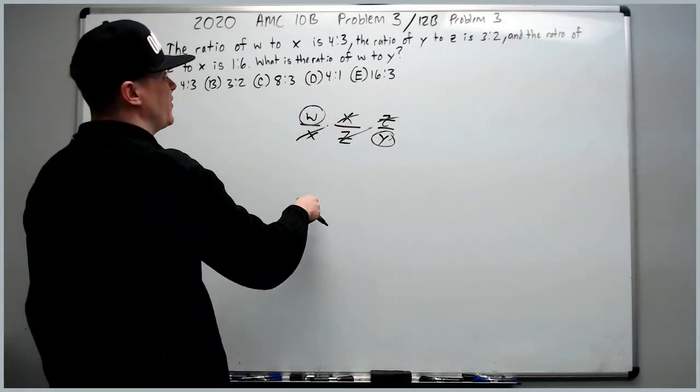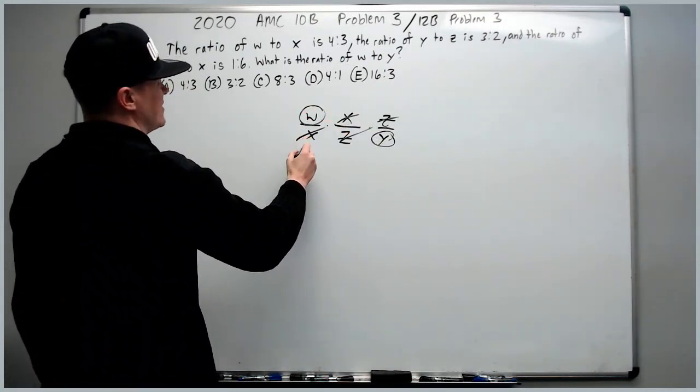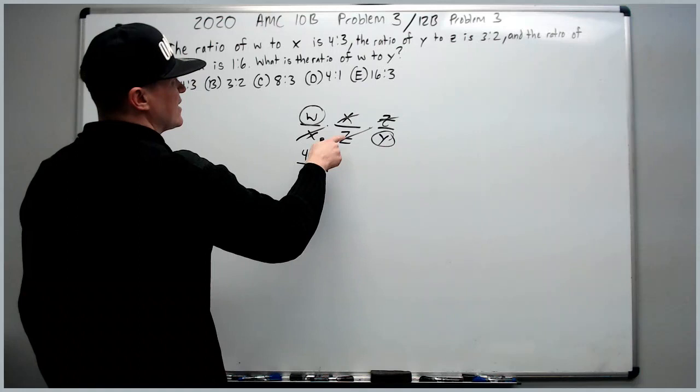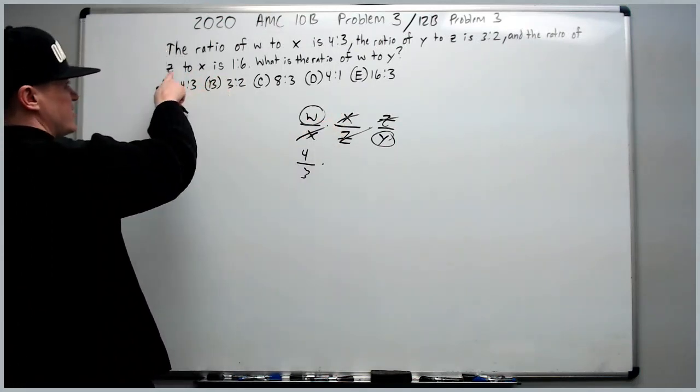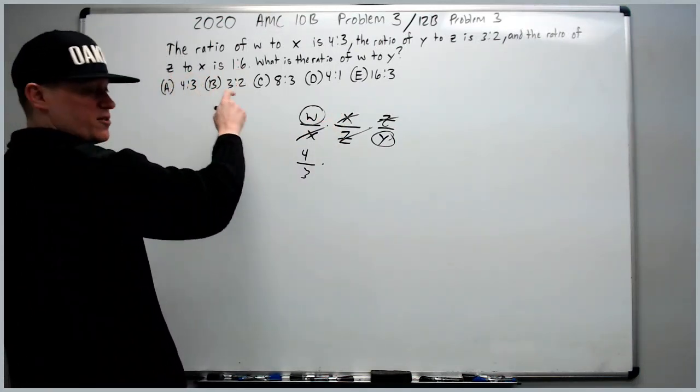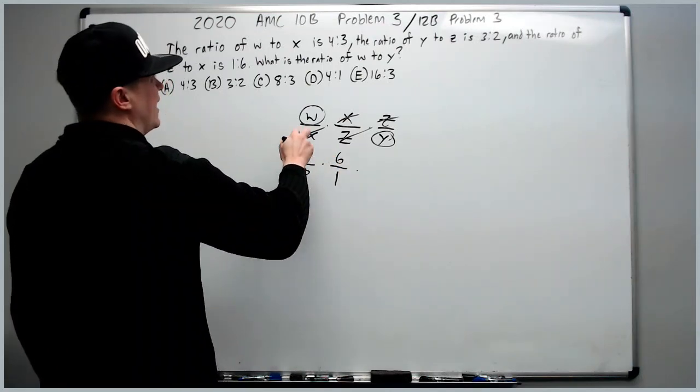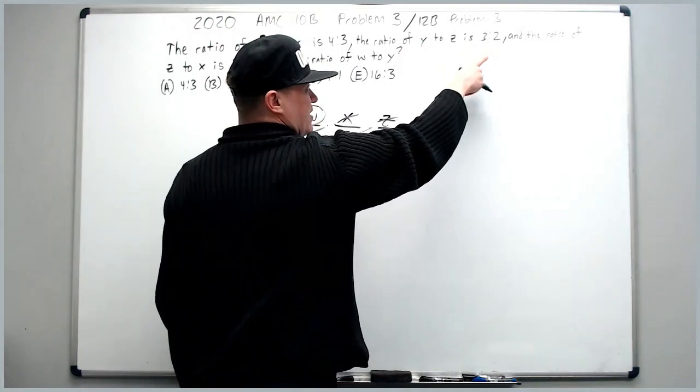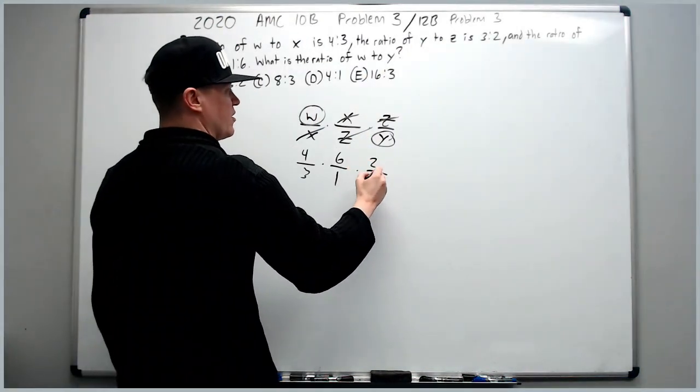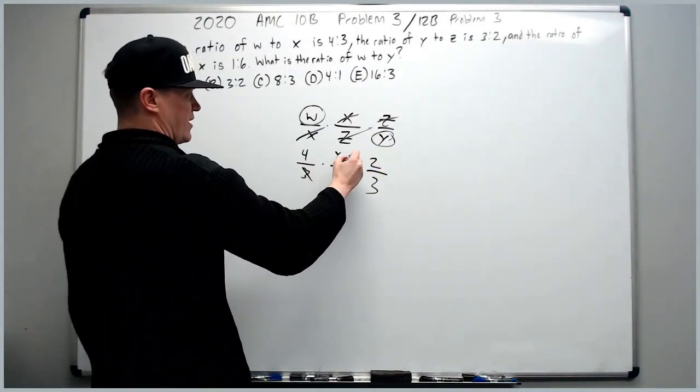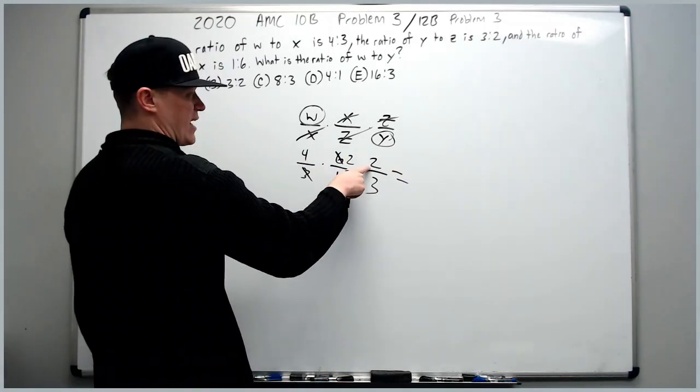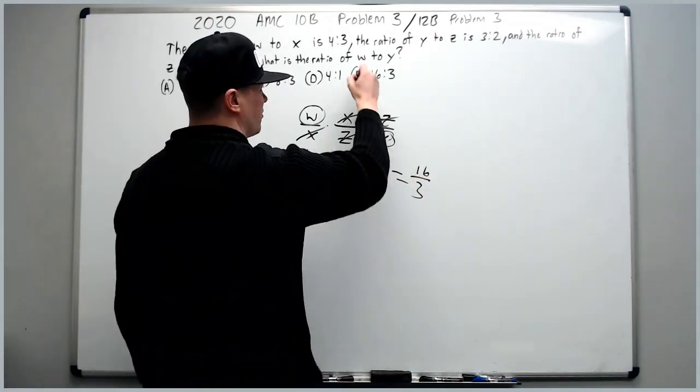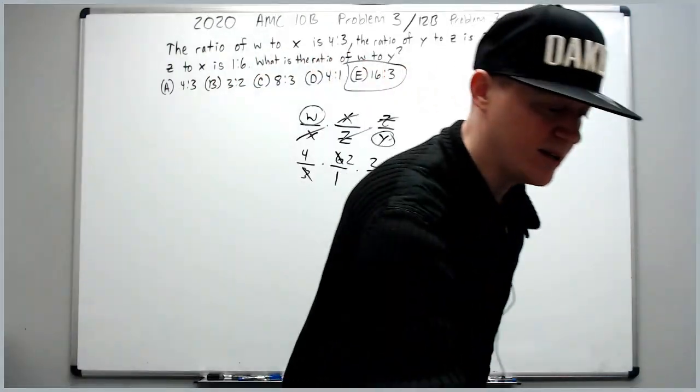So let's just fill these in with what they are. W to X is 4 over 3 times X over Z. Now, Z to X is 1 to 6. We just reverse it and get 6 over 1 times Z over Y. If Y to Z is 3 to 2, then Z to Y is 2 to 3. One of these 3's cancels to 6. 4 times 2 is 8 times 2 is 16 over 3. That's answer choice E and we're on to the next one.